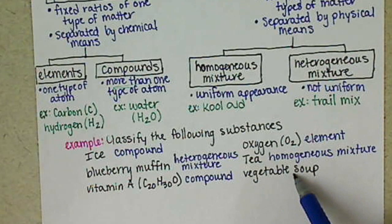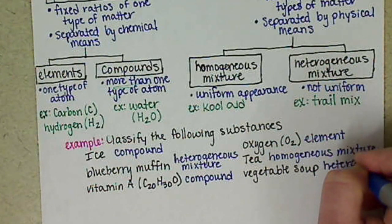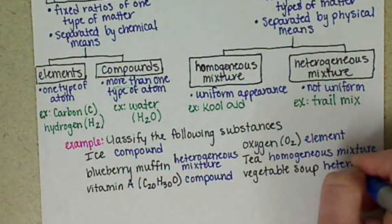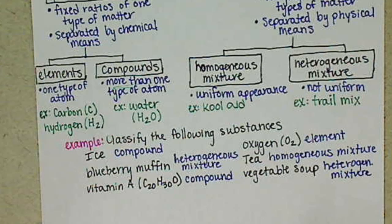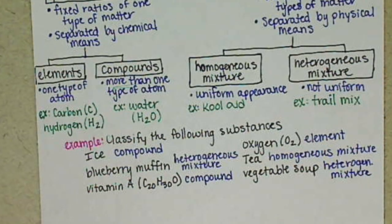For our vegetable soup, this would be a heterogeneous mixture. Not every ladle full of soup is going to get the same ratio of potatoes to beans to onions, things like that. So we have a heterogeneous mixture.